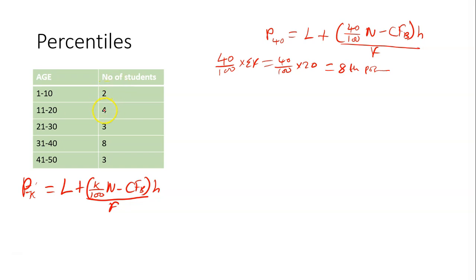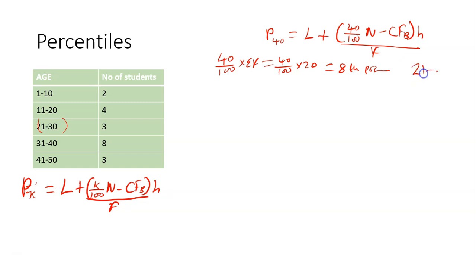So let's locate the 8th position. 2 plus 4 gives 6 — not up to 8th position. Plus 3 gives 9, so at this point you are at the 8th position. The 8th position class is class 21 to 30.